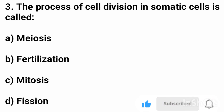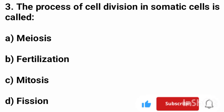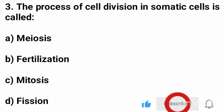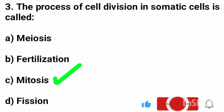Question number 3. The process of cell division in somatic cells is called? The correct answer is option C, mitosis.